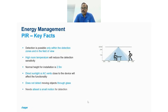Another important point: PIRs do need at least a small motion for detection. You cannot simply be present and expect detection — you need to move to create heat sensed by the pyroelectric sensor. If you stand or sit completely still, no temperature difference is created in the surrounding area, so it cannot detect. In short, at least a small motion is required for detection.